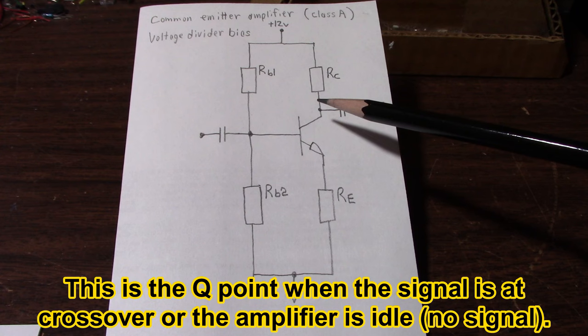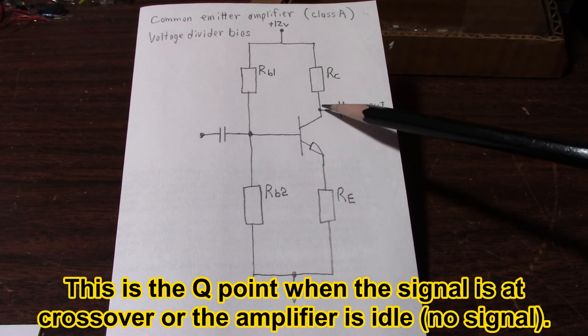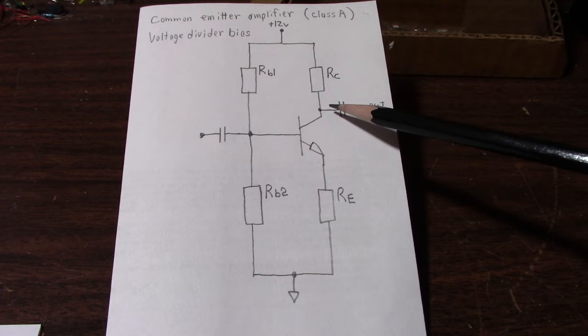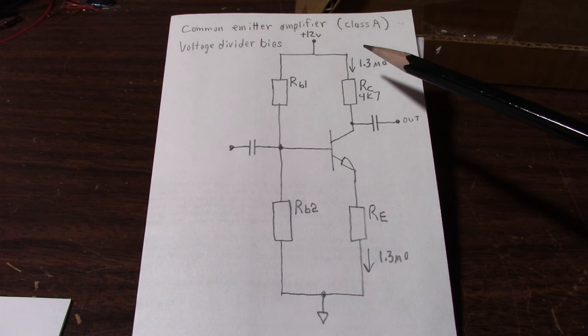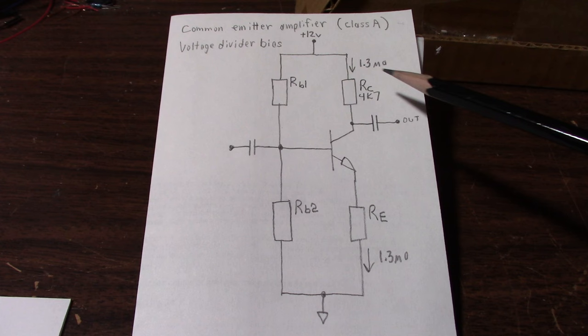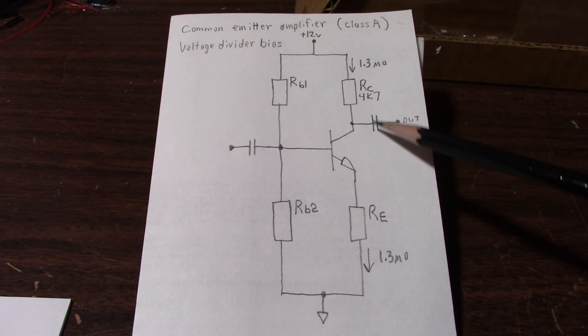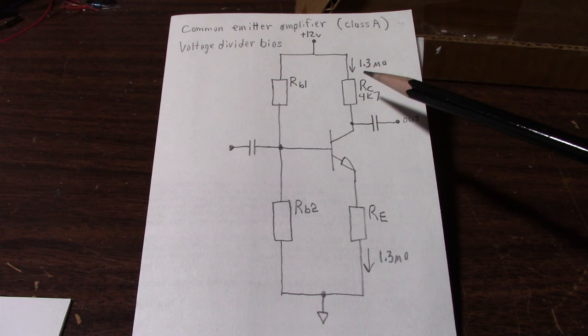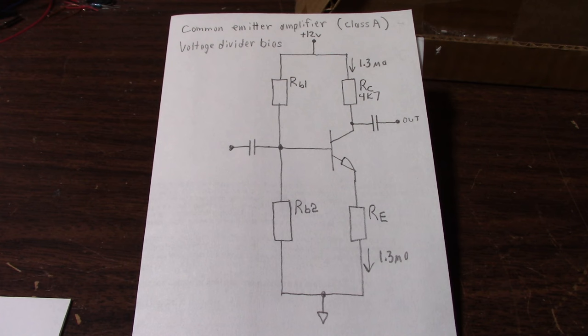So yeah we bias it about half the supply voltage. So half the supply voltage, 12 volts divided by 2 is 6 volts. Now we know our collector current. So with a little bit of Ohm's law we know that the current is 1.27 milliamps and I just rounded it to 1.3. So 6 volts divided by 4.7K is 1.3 milliamps. And again that's what's flowing in our emitter circuit as well.